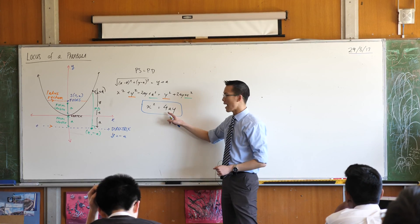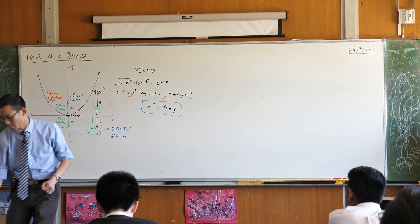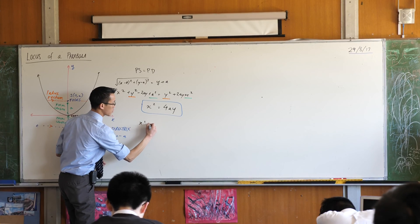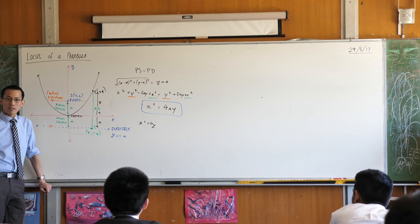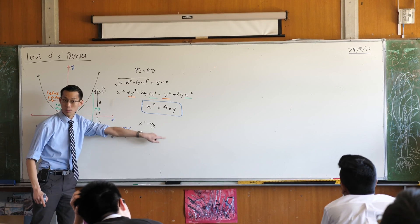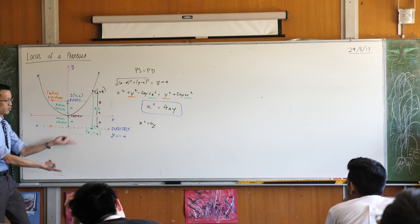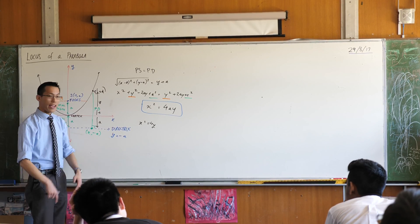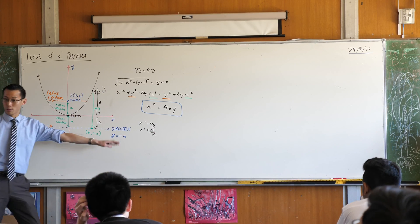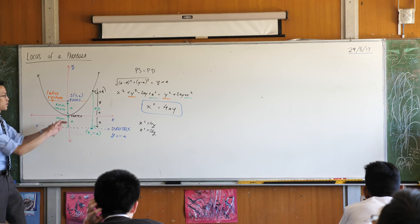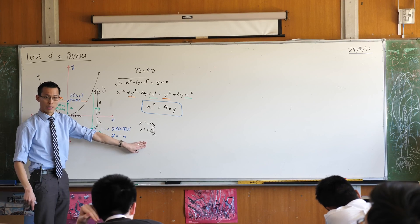What would happen if I made a smaller or bigger? For instance — you don't have to write this — if you considered x squared equals 4y, then a would be 1, because it's 4 times 1 times y. So the focus would be at (0, 1) and the directrix would be y equals negative 1. If on the other hand a is equal to 4, the focus and directrix would shift accordingly based on your new focal length.